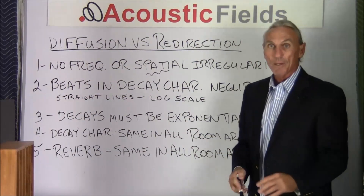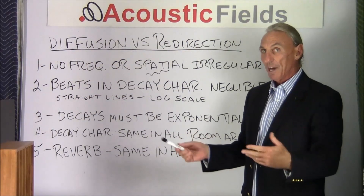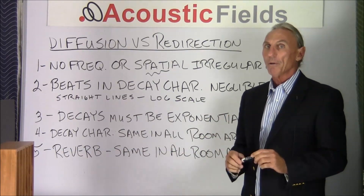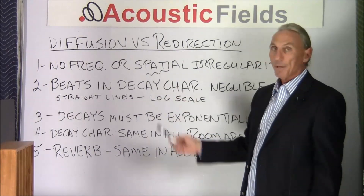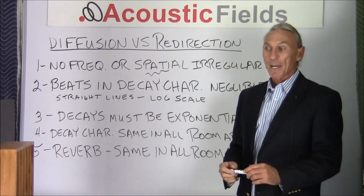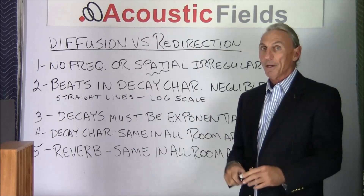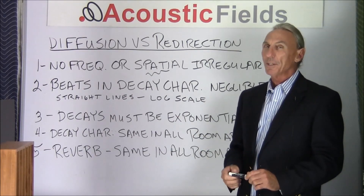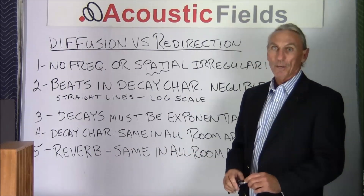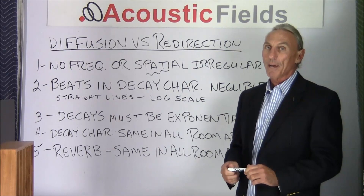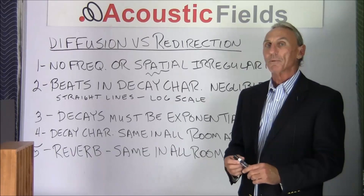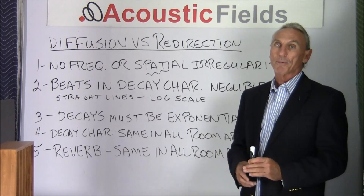Let's look at no frequency or spatial irregularities — would a sound redirection device accomplish that? Maybe. But since it doesn't work well below 300 cycles, we'd probably have issues in that range. Beats and decay characteristic negligible? If there's a spatial irregularity in the frequency response of the unit itself, you're going to have difficulties with that — and difficulties having an exponentially consistent decay rate. Reverb time and decay characteristics throughout the room must be met, and the device must be able to contribute to that.